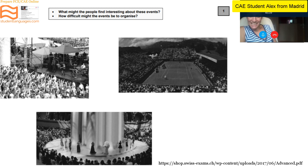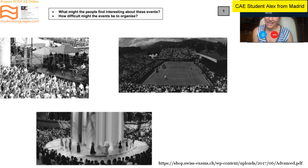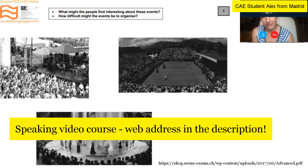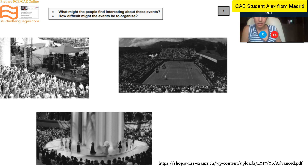I can give you some feedback — I can tell you what you were doing well and what you weren't doing well. Watch the video lesson after, because I explain there what the best things to do are. Firstly, the first thing you need to do is read the two questions at the top: 'What might the people find interesting about these events?' Don't describe the pictures at all — just say what they're going to find interesting. Also, you said 'picture one and picture two' but I don't know which is which because they don't have numbers, so I would say 'the picture in the top left.'